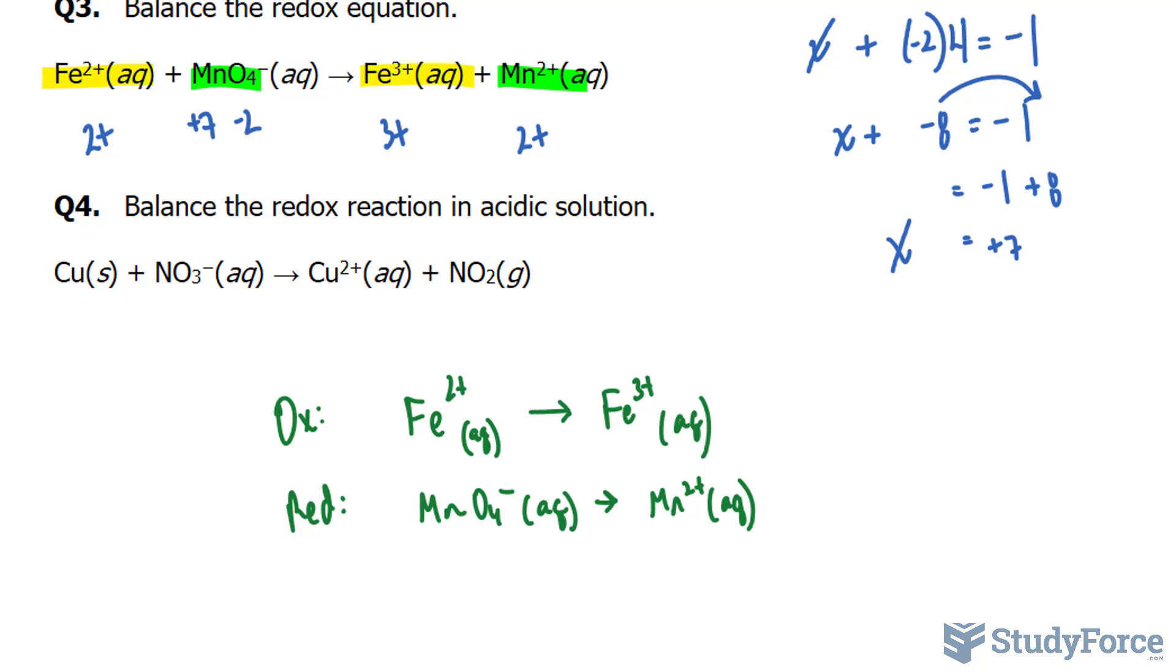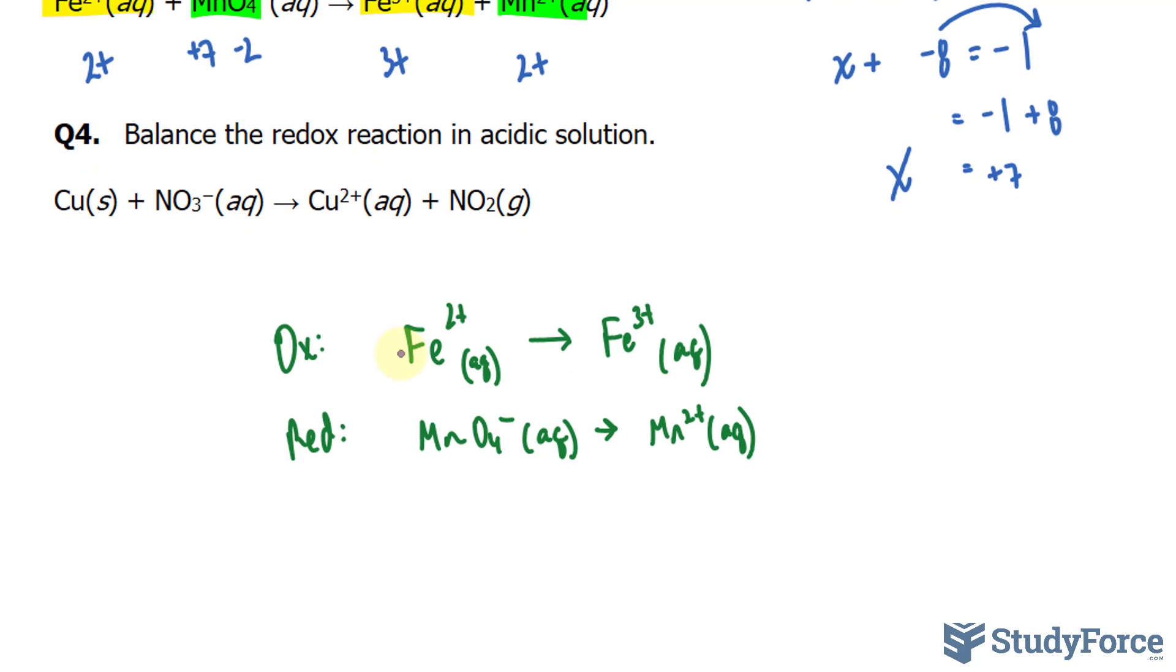Now, we have to balance these two equations. We start by balancing the masses. Take a look, we have one molecule of Fe2+ and one molecule of Fe3+, they are balanced. In this equation, the Mn's are balanced, but the oxygens are not. We have 4 here and none here.